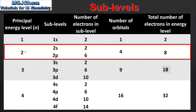Next we have n=2, which has a 2s sublevel and a 2p sublevel. The 2s sublevel can hold 2 electrons and the 2p sublevel can hold 6 electrons. The number of orbitals is 4, which can hold a total of 8 electrons.